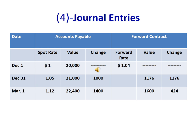First, we need to calculate accounts payable in dollars for our three dates: December 1st, the end of the year, and March 1st. On December 1st, the accounts payable was $20,000, which increased by the end of the year to $21,000, and increased again on March 1st to $22,400, meaning the exchange rate changed in an unfavorable way.